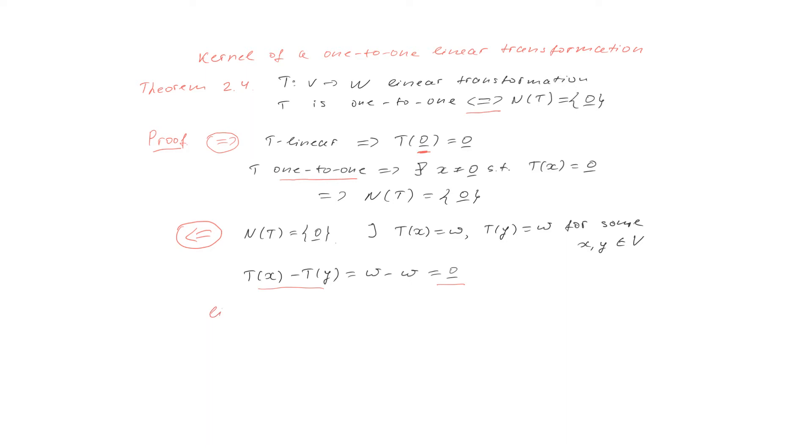How do we do that? We can use the property of a linear transformation. Then we can write that T(x) minus T(y) is T of x minus y and that was equal to the zero vector.